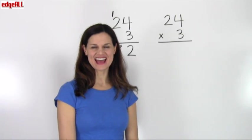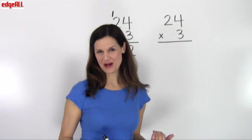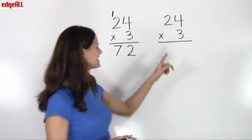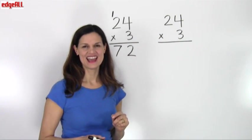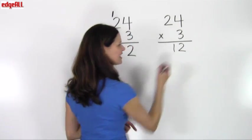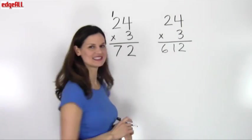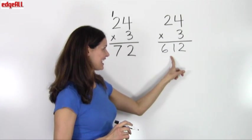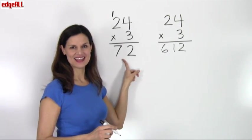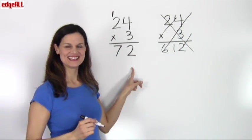Let's take a look at a mistake that's commonly made. If you are working on a multiplication problem and you don't regroup, you can come up with some pretty wrong answers. Looking at 24 times 3 again: if I just said 3 times 4 equals 12 and wrote 12 down, then 3 times 2 equals 6 and wrote 6, you can see that the answer from not regrouping is very different from the correct answer of 72. So we don't want to forget to regroup.